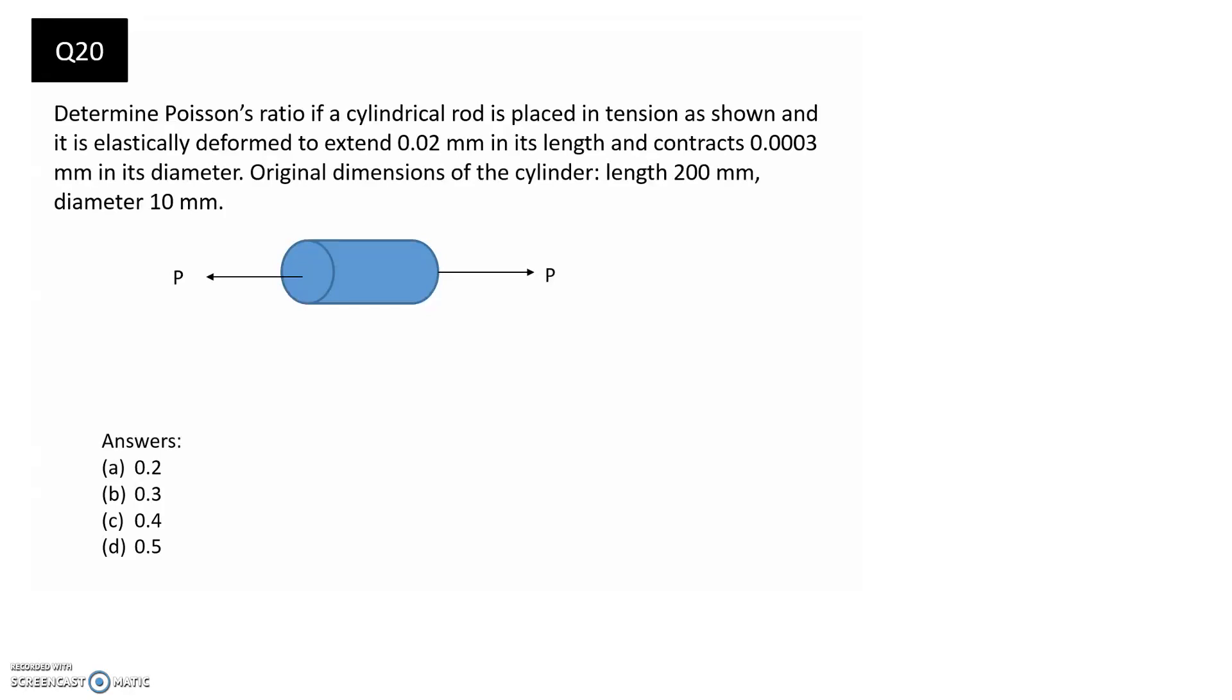We're asked to determine Poisson's ratio if a cylindrical rod is placed in tension as shown and is elastically deformed to extend 0.02mm in its length and contracts 0.0003mm in its diameter. Original dimensions of the cylinder are a length of 200mm and a diameter of 10mm.